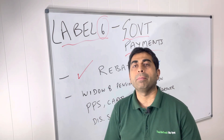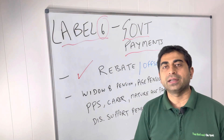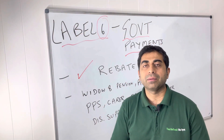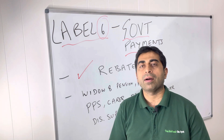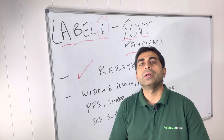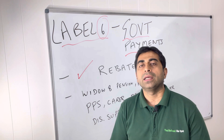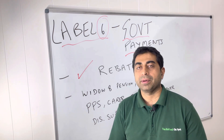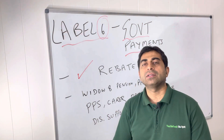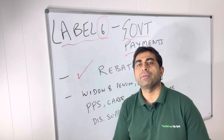But with level six payments, the benefit is that you get a rebate or an offset. Basically, whatever tax you owe, sometimes you don't have to pay it all, or you pay only part of it — it depends on your other income. So you get a tax benefit; that is the main thing.